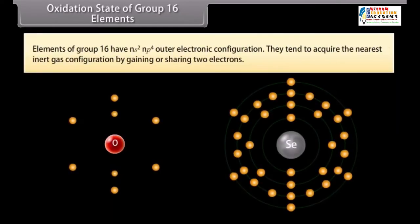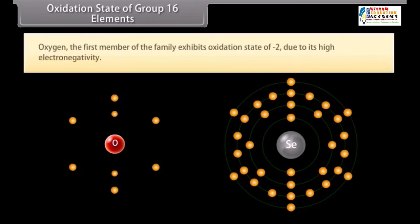Oxidation state of group 16 elements. Elements of group 16 have NS2, NP4 outer electronic configuration. They tend to acquire the nearest inert gas configuration by gaining or sharing two electrons.